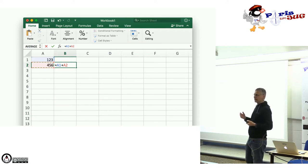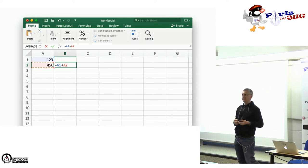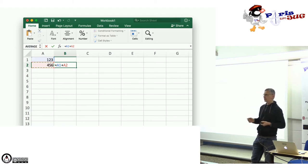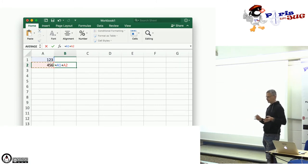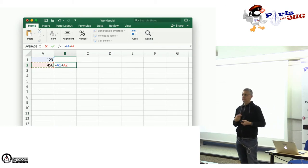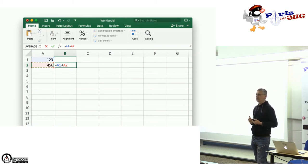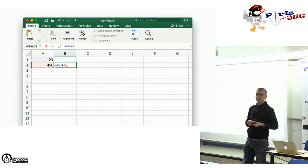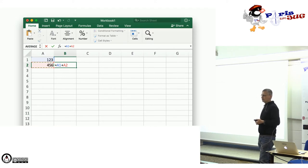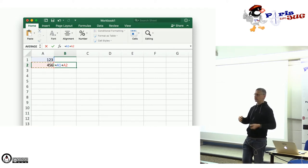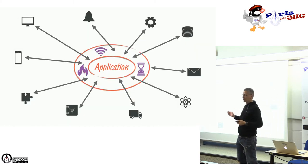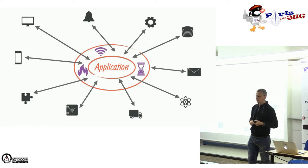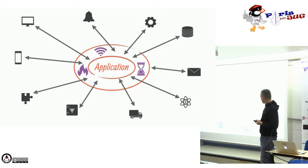La différence, c'est qu'Excel est une application sur votre bureau qui interagit très peu avec son environnement — tout se passe dans le même espace mémoire. Ce n'est pas une application distribuée. Ce qui nous intéresse, ce sont des applications à base d'événements, distribuées, avec beaucoup d'interactions avec leur environnement : fichiers, autres processus, réseau, messages.